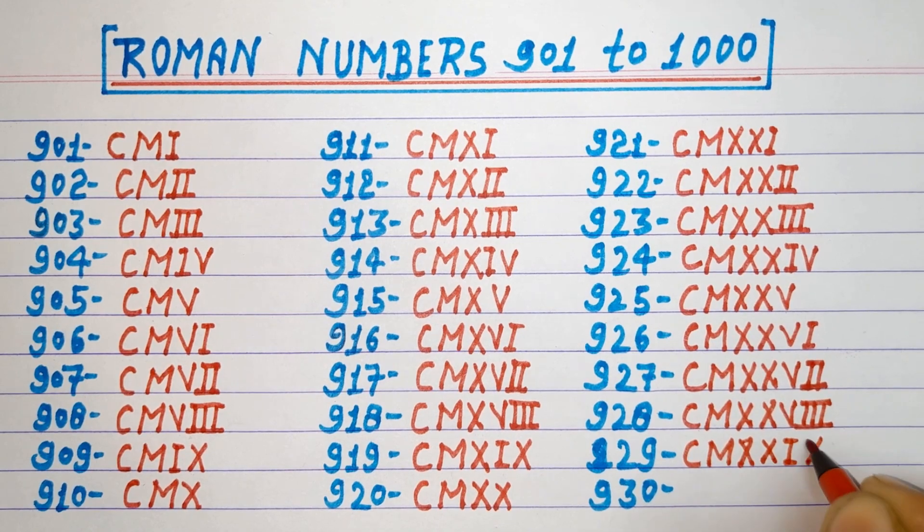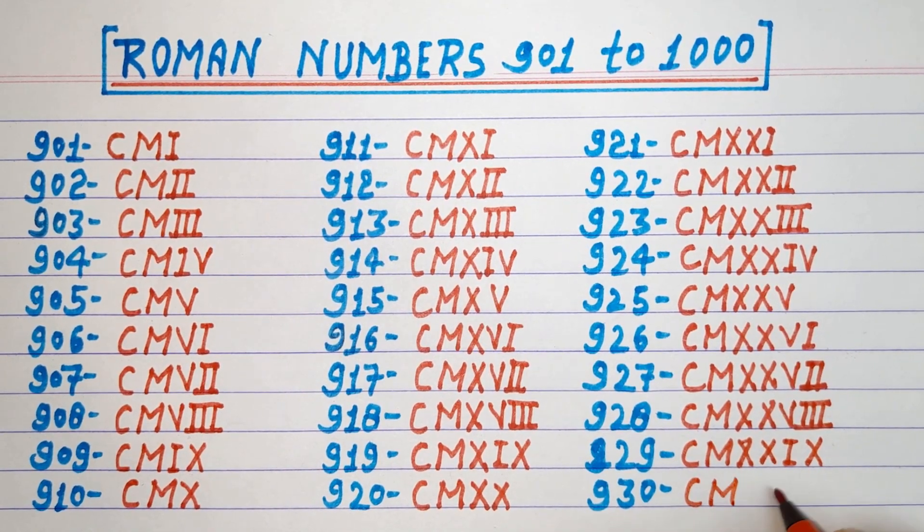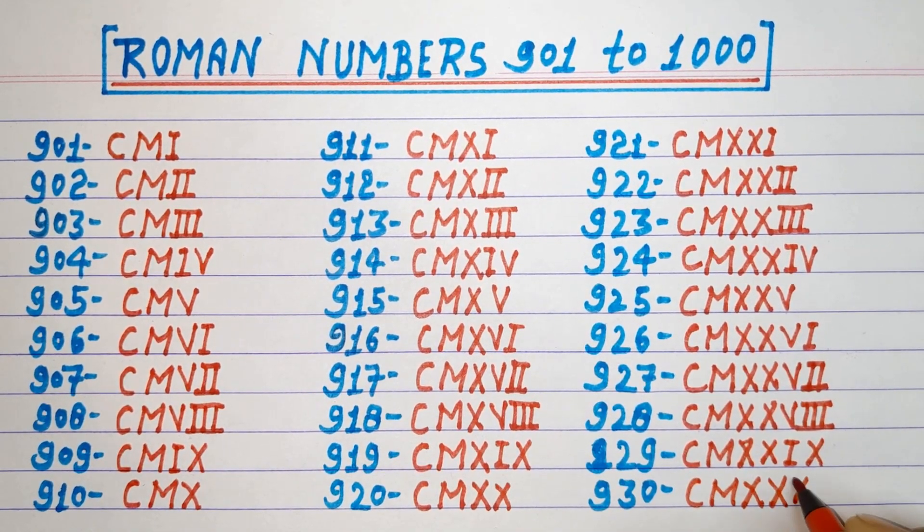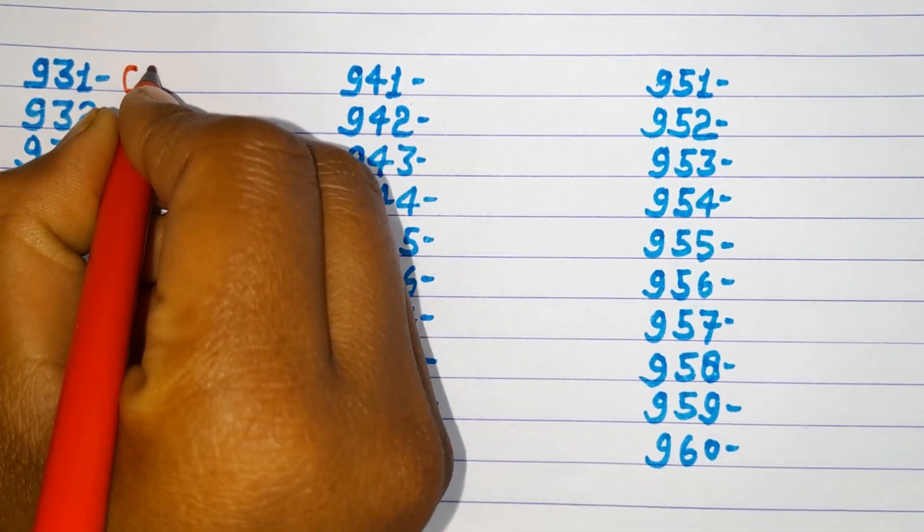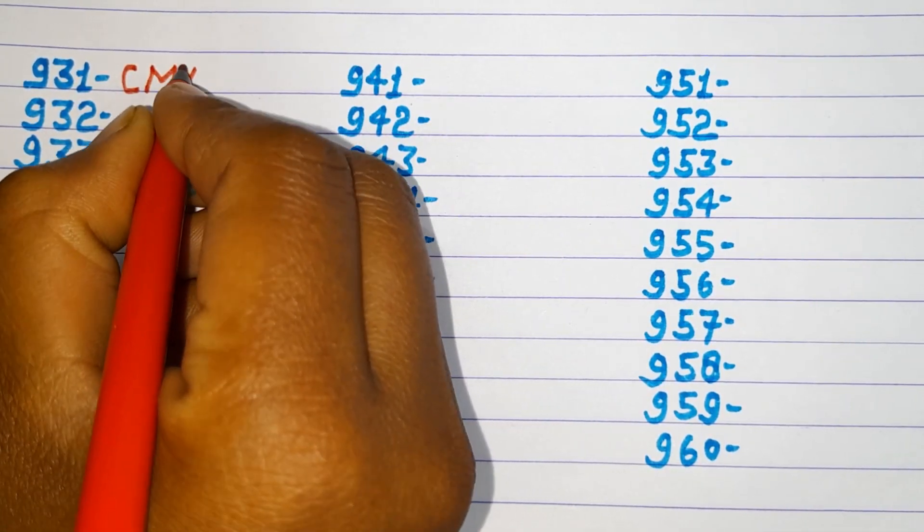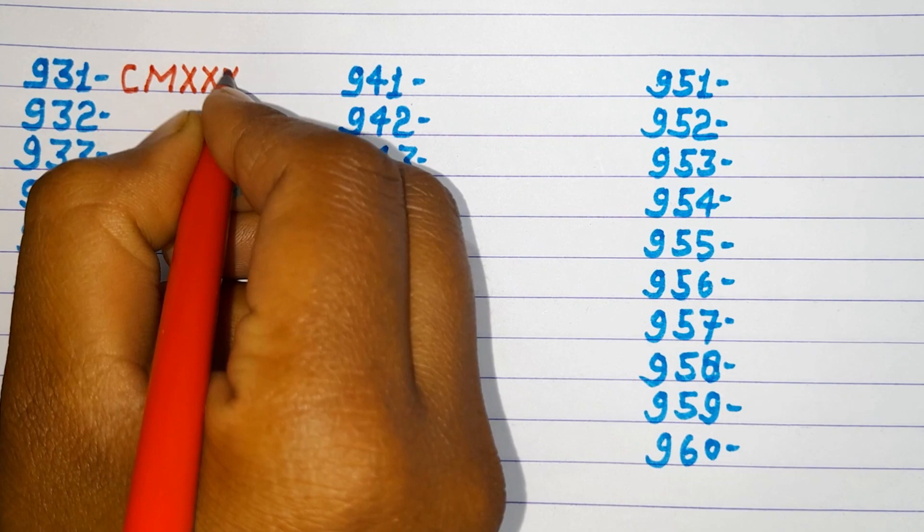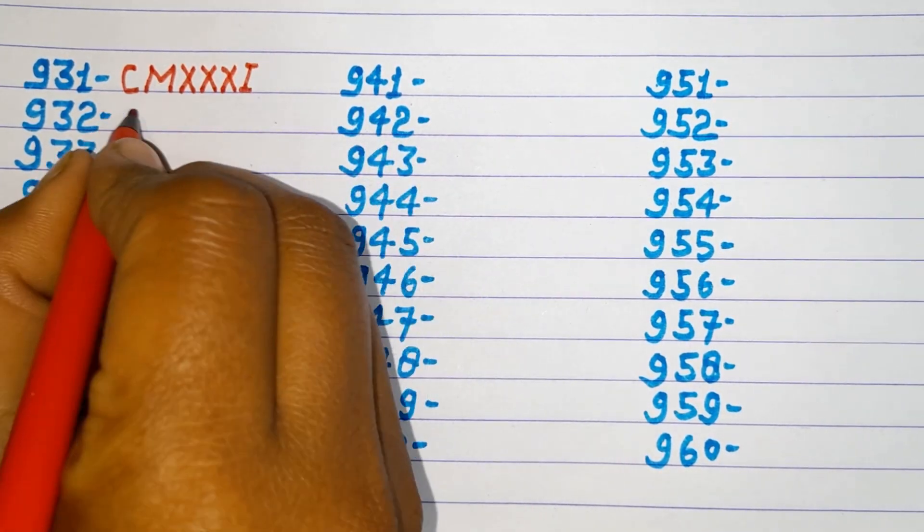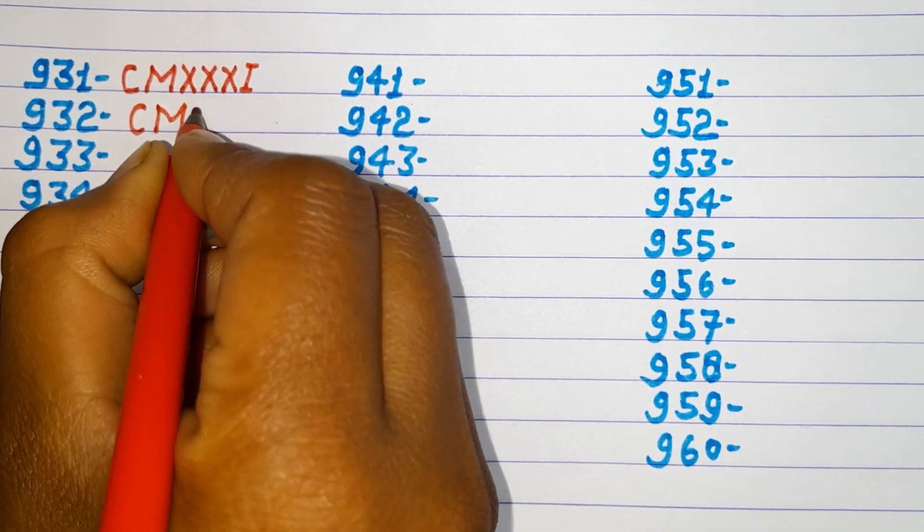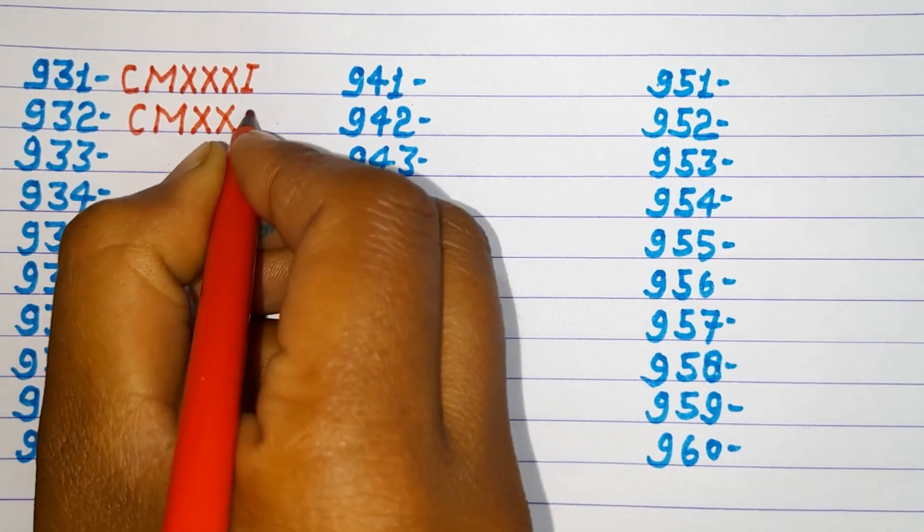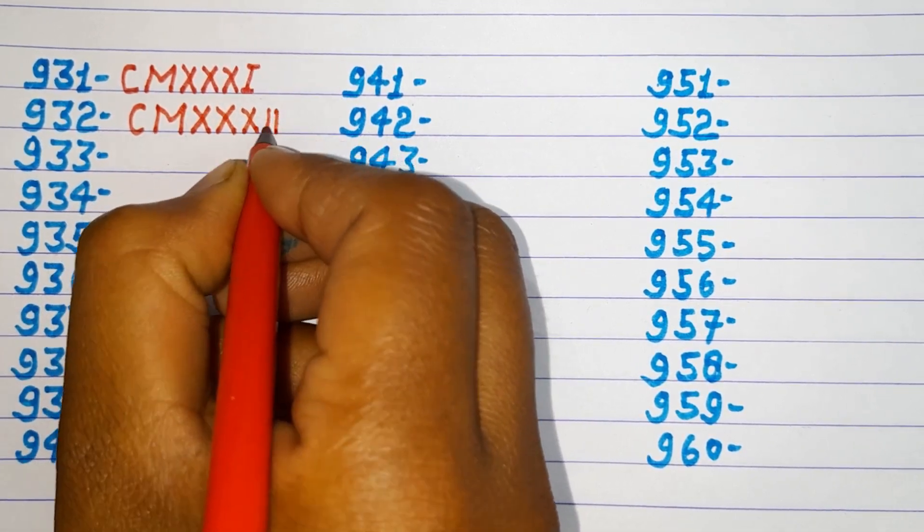928 CMXXVIII, 929 CMXXIX, 930 CMXXX, 931 CMXXXI, 932 CMXXXII.